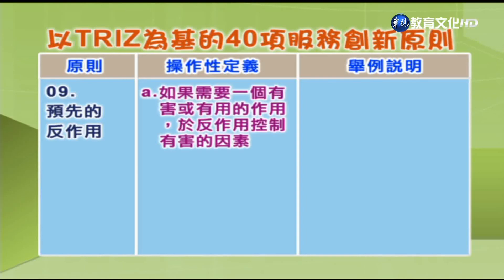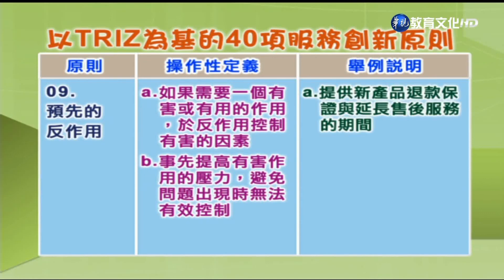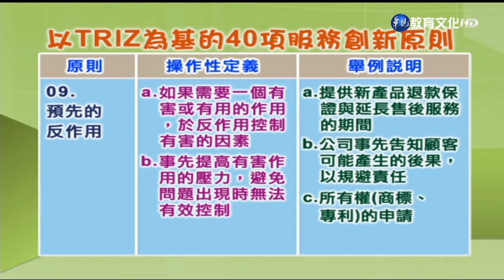第9项「预先的反作用」：如果需要一个有害或有用的作用，预先处理反作用，控制有害的因素；事先提高有害作用的压力，避免问题出现时无法有效控制。举例：A.提供新产品退款保证与延长售后服务期间；B.公司事先告知顾客可能产生的结果以规避责任；C.所有权或商标专利的申请。